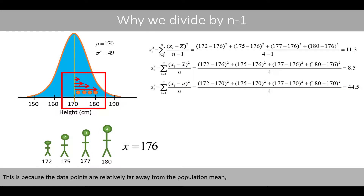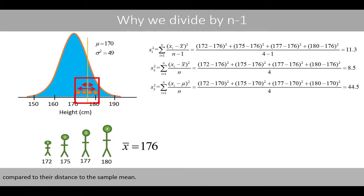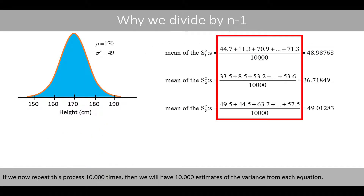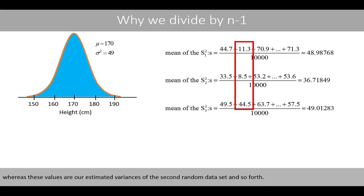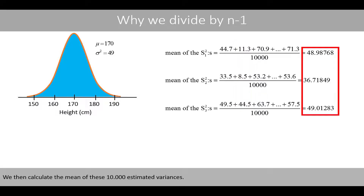This is because the data points are relatively far away from the population mean, compared to the distance to the sample mean. If we now repeat this process 10,000 times, then we will have 10,000 estimates of the variance from each equation. For example, these values correspond to our estimated variances for the first random data set, whereas these values are our estimated variances for the second random data set, and so forth.